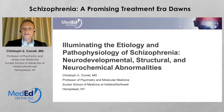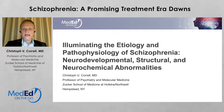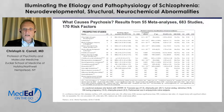Welcome to Illuminating the Etiology and Pathophysiology of Schizophrenia: Neurodevelopmental Structural Neurochemical Abnormalities. My name is Christoph Correll. I'm Professor of Psychiatry and Molecular Medicine at the Zucker School of Medicine at Hofstra Northwell in New York, and also Professor and Chair of Child and Adolescent Psychiatry at the Charité University of Medicine in Berlin, Germany. Let's start by reviewing what are the risk factors for schizophrenia.